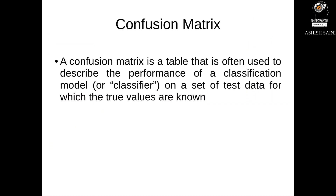A confusion matrix is a table that is often used to describe the performance of a classification model on a set of test data for which the true values are known. In short, the confusion matrix is the summary of a prediction result on a classification problem.